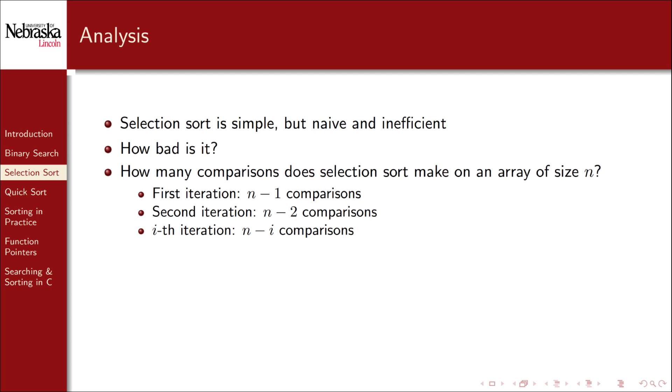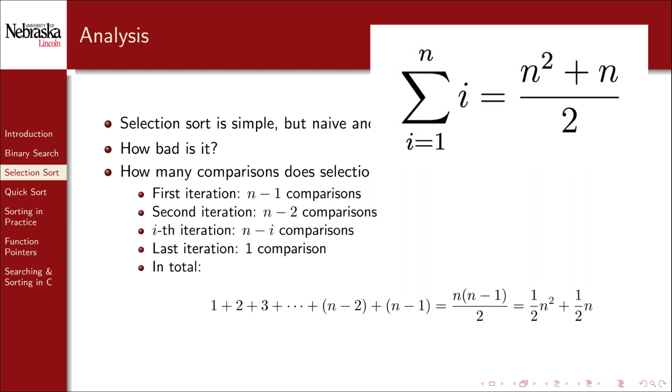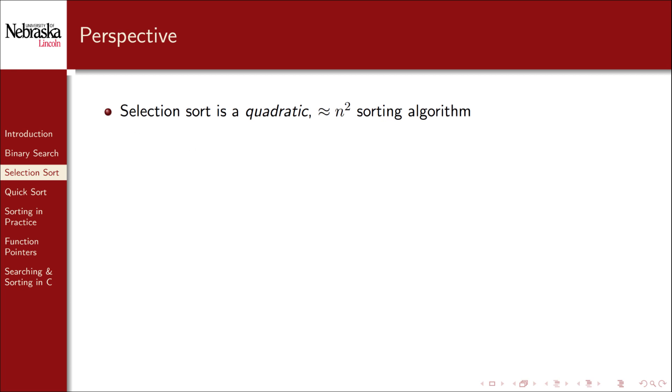In general, on the i-th iteration it will make n minus i comparisons. On the last iteration it only has two elements to compare to find the minimum, so it only makes one comparison. Adding these all up from last to first gives us the following summation. You can solve this summation using Gauss's formula. The key conclusion is that selection sort is a quadratic sorting algorithm. The highest order term, ignoring constants, is n squared. That's the most important term in that equation.